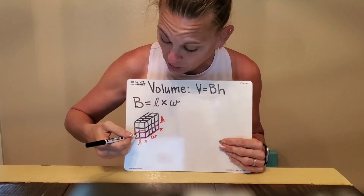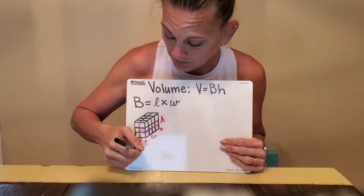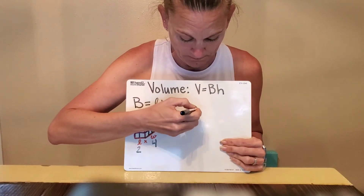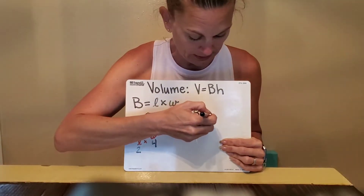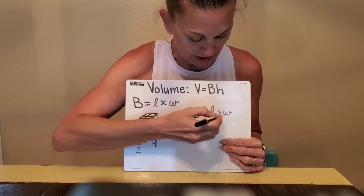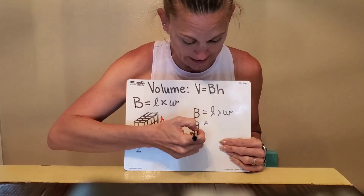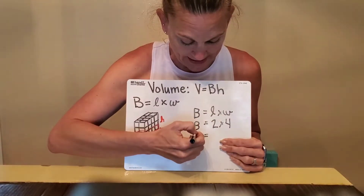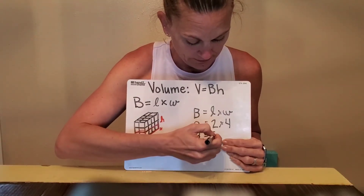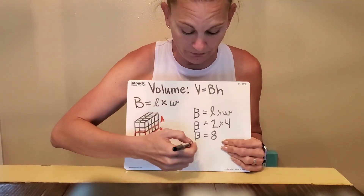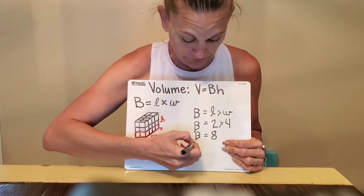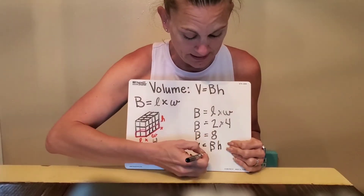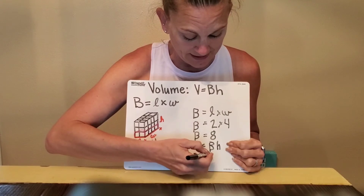So when you get volume equals base times height, you need to find out the base. Here we can see that the length is two and the width is one, two, three, four. So base equals length times width. For this one, base equals two times four, so base equals eight. Then you can plug in: volume equals base times height. Volume equals eight...